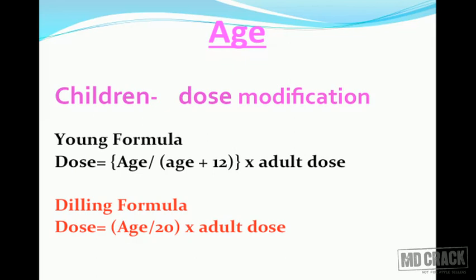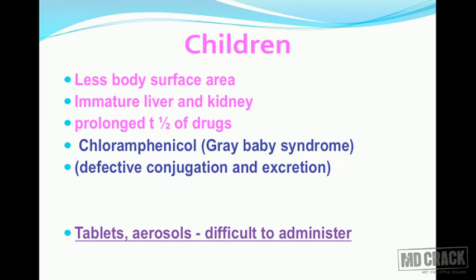The first patient-related factor is age. Age makes a lot of difference and you need to modify the drug dosage. For children, there is a formula: dose equals age of the child divided by 20, multiplied by the adult dose. Children have less body surface area, immature liver and kidney, and prolonged half-life of various drugs. For example, chloramphenicol may not get conjugated by glucuronide conjugation and may accumulate, producing gray baby syndrome, especially in neonates.